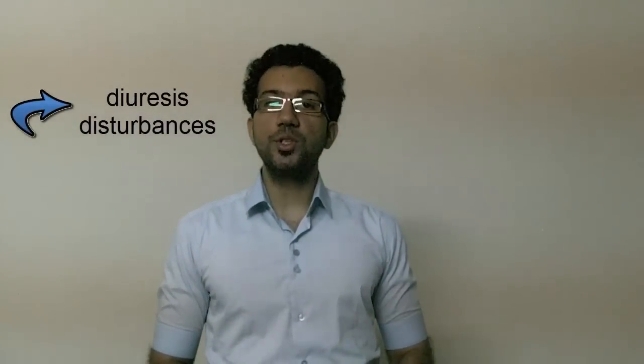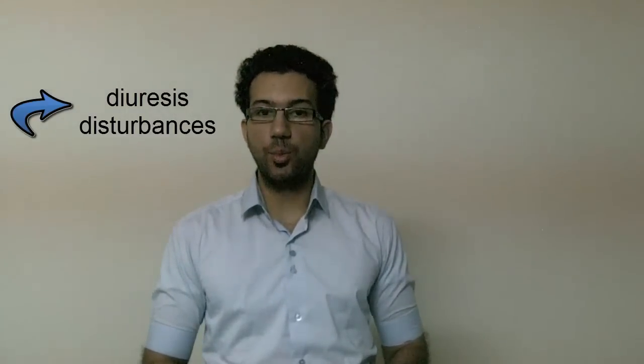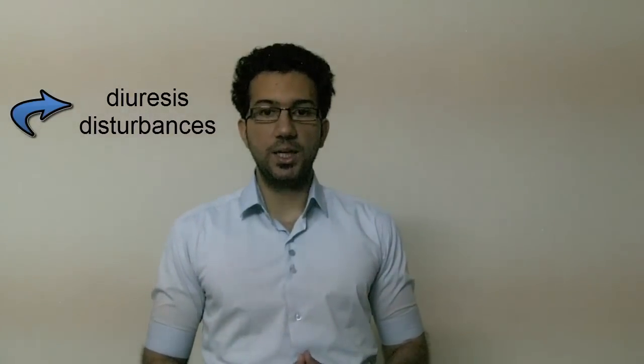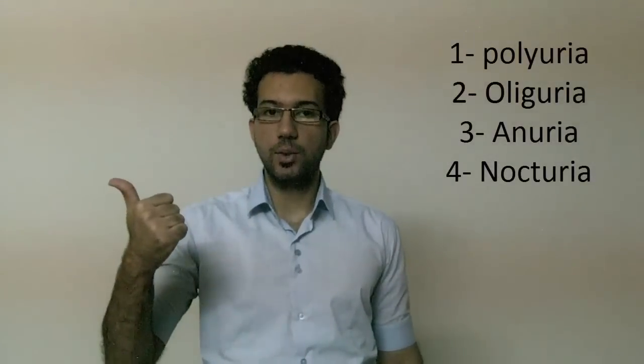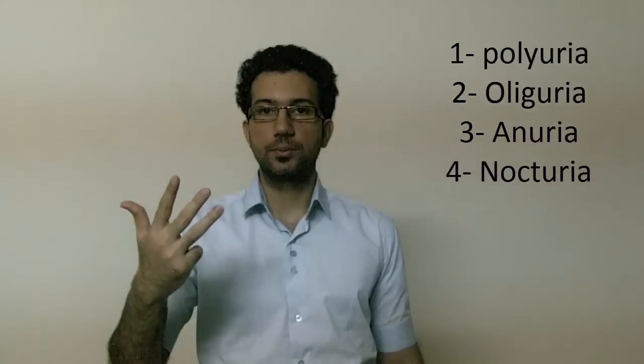Hello everybody, welcome back. Our topic today is diuresis disturbances. Before we start talking about the different types of diuresis disturbances, what does diuresis mean? Diuresis is the urine production. Diuresis disturbances include polyuria, oliguria, anuria, and nocturia.